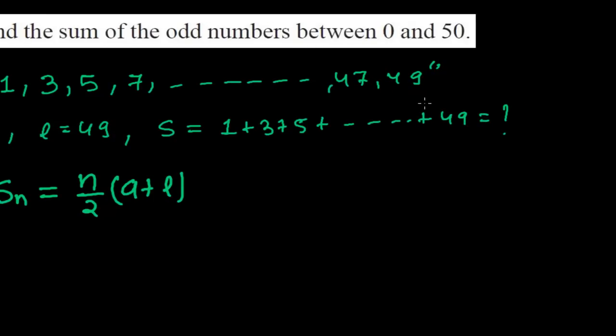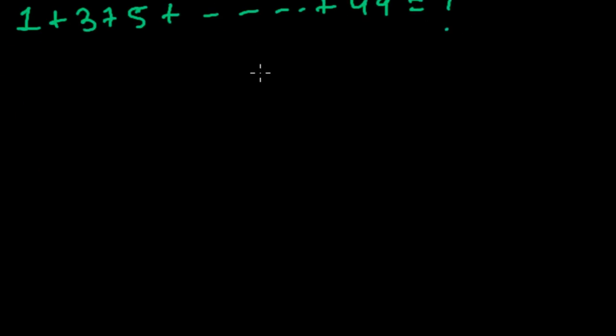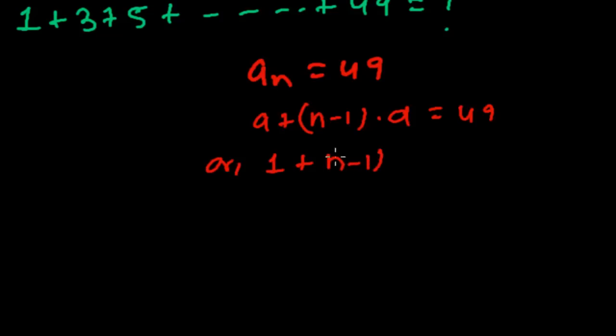49 is how much term, I don't know, so I am just finding that out. So an is 49, that I know. I am using the nth term formula: a plus n minus 1 times d equals 49. Here a is 1, n minus 1 I don't know the value.